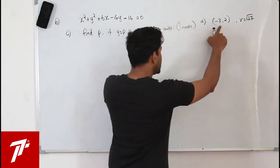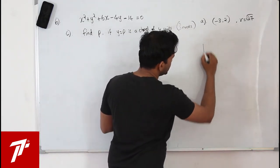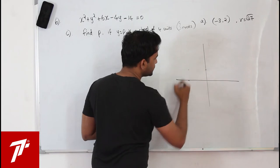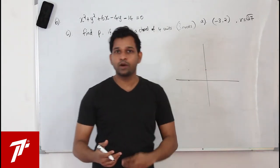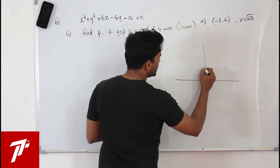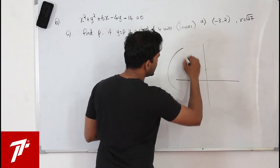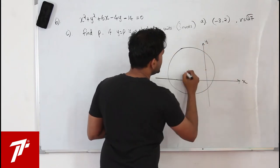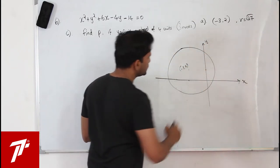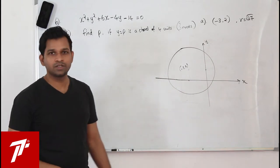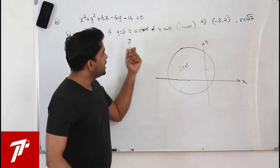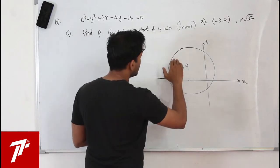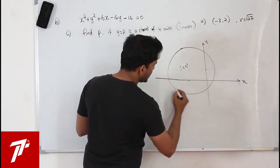Let's draw a rough figure. The center is at (minus 3, 2) and radius is sqrt(27), about 5 point something. Since p is a negative constant, the chord y = p lies below the center. Let the chord endpoints be A and B, with chord length 4 units.